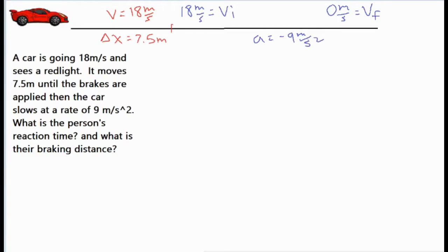If it was positive 9, that would be speeding up. Okay, so let's go ahead and solve the first portion of this problem. We're looking for the reaction time, so we can use our constant velocity formula, which is delta x displacement over time equals the velocity. And this one's a pretty simple calculation. We know how far they moved, they moved 7.5 meters.